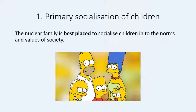The first of these two functions is called primary socialisation of children. We've already looked at the education function in Murdoch's four functions — this just takes it one step further. Write a subtitle and, if you'd like, draw a diagram — I've used a picture of the Simpsons, but you can draw a father, a mother, and two or three children. Remember that at the time Parsons was writing, same-sex families did not exist, certainly legally.